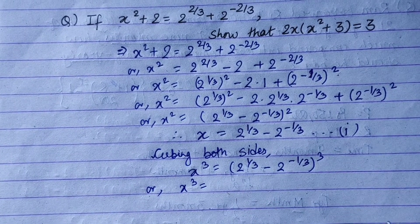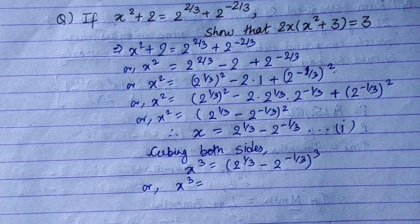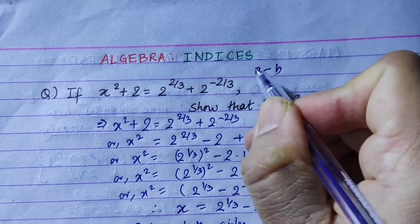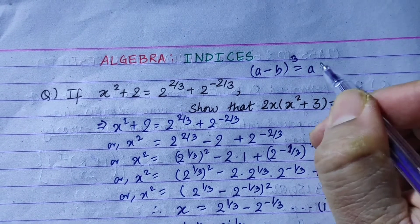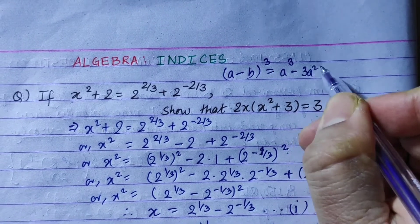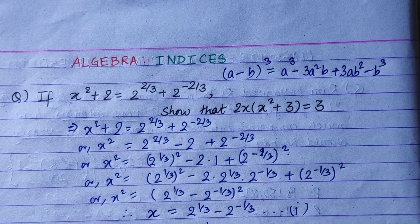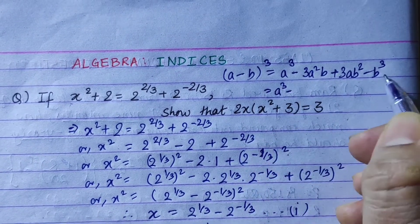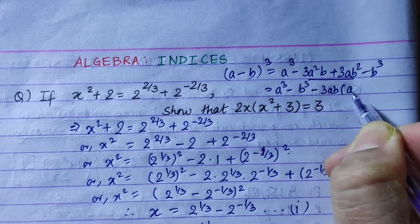So x cubed equals — using the formula a minus b whole cube equals a cubed minus 3a squared b plus 3ab squared minus b cubed — this simplifies to a cubed minus b cubed minus 3ab times a minus b.